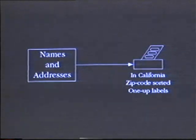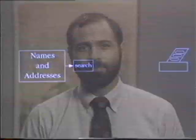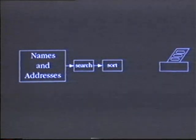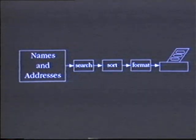Sorted by zip code and formatted into one-up labels. On most computers you'd have to buy or write software to do this conversion from data in the file to data on the printer. Because of the use of filters, UNIX allows you to do this directly with tools provided by the system. The first step is to move the names through a searching filter to find those in California, connect this to a sorting filter to put them in zip code order, then move them through a formatting filter for one-up labels. You can send them directly to the printer or store them in a file for later use.